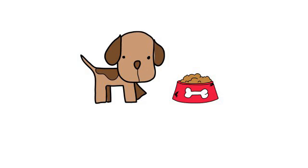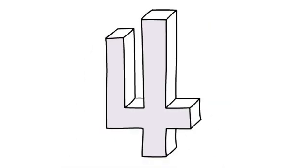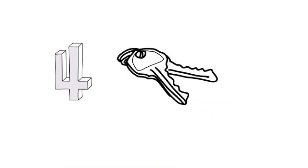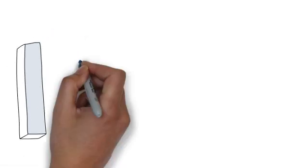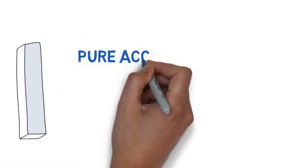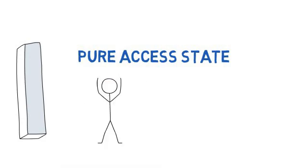In NLP, we can use anchors to create powerful resource states. We introduce the stimulus and the client feels good. To effectively anchor, you need four specific keys at work. The first key is having a pure access state.